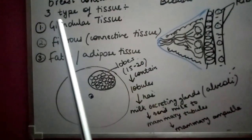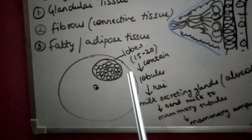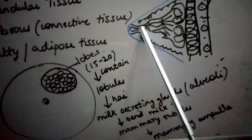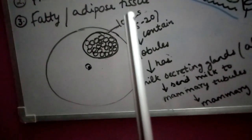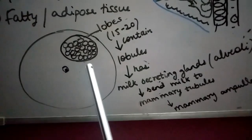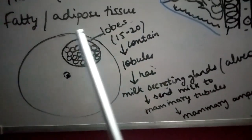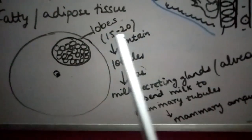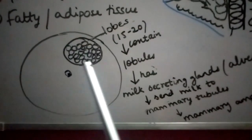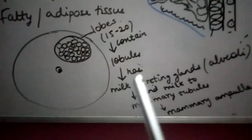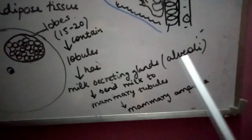Glandular tissue, as the name suggests, contains glands. Looking at the diagram, the glandular tissue comprises lobes — there are 15 to 20 lobes present in each breast. Each lobe contains lobules, and these lobules have milk-secreting glands also known as alveoli, which help in the production of milk.